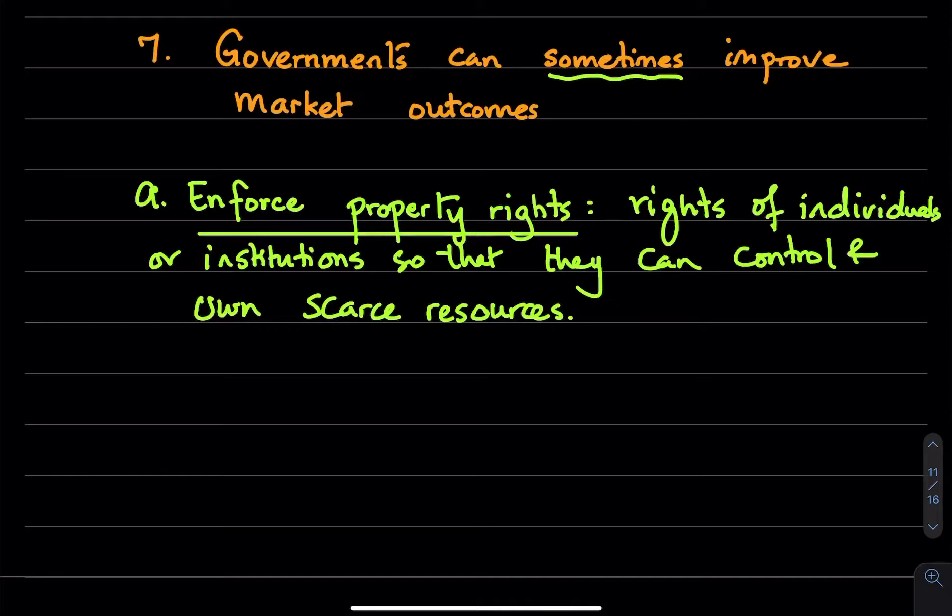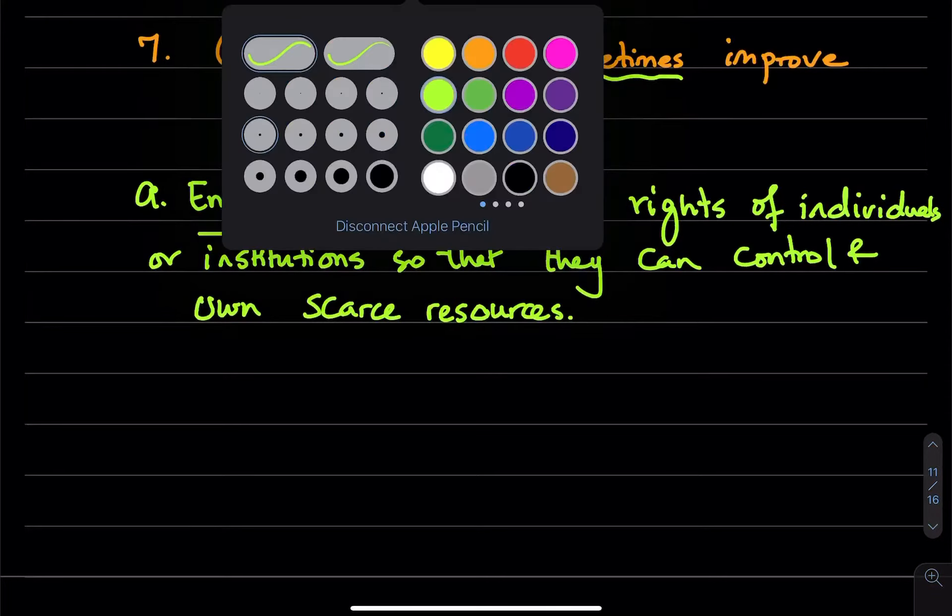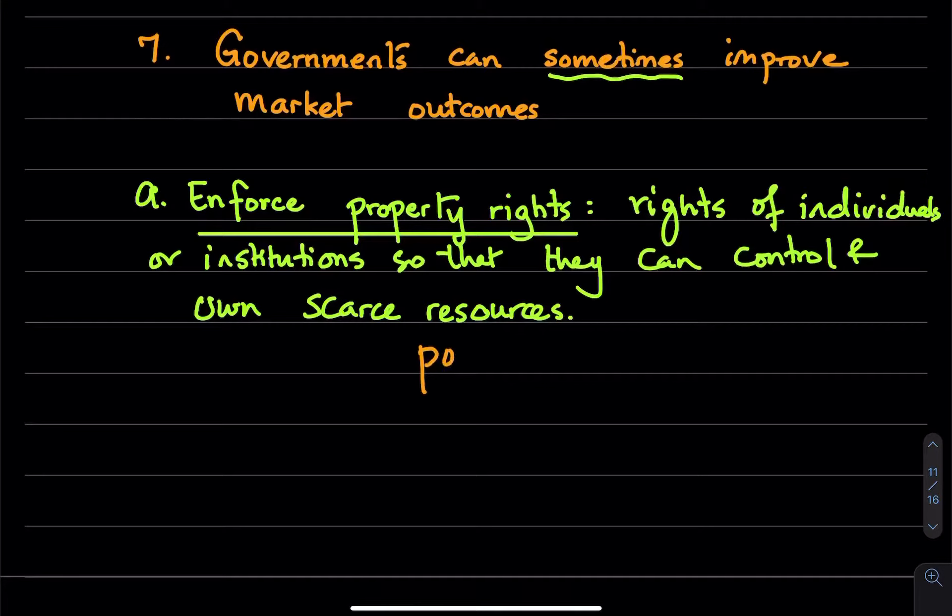And a record or film company wouldn't produce movies if too many potential customers are avoiding payment by making illegal copies. So the idea here is for the market economy to work smoothly, the government provides different resources like leasing, courts, or our judicial system to enforce property rights over the things we own and we produce. And so the invisible hand can only work if these property rights are in place.